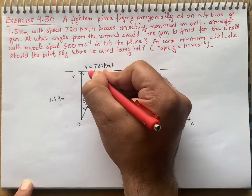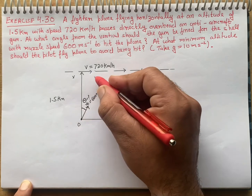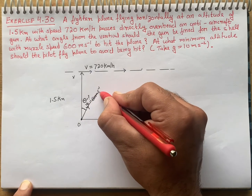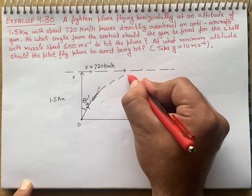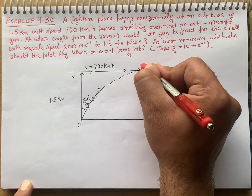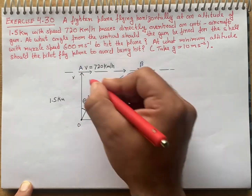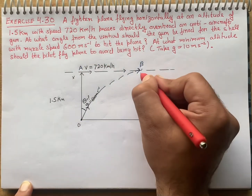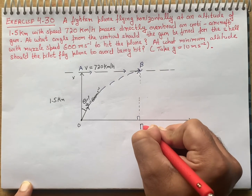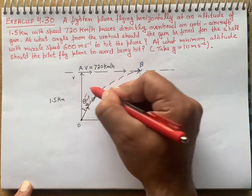Let's see that my fighter plane is going in this direction. My anti-aircraft gun has traced the plane and fires a shell. Let point B be where the shell is fired from, and let point A be the target. In the first part, we need to find theta.